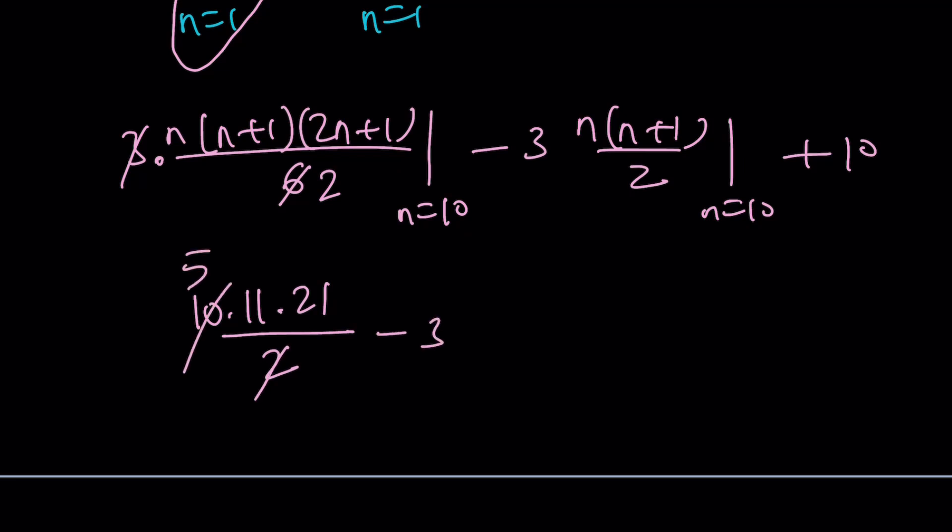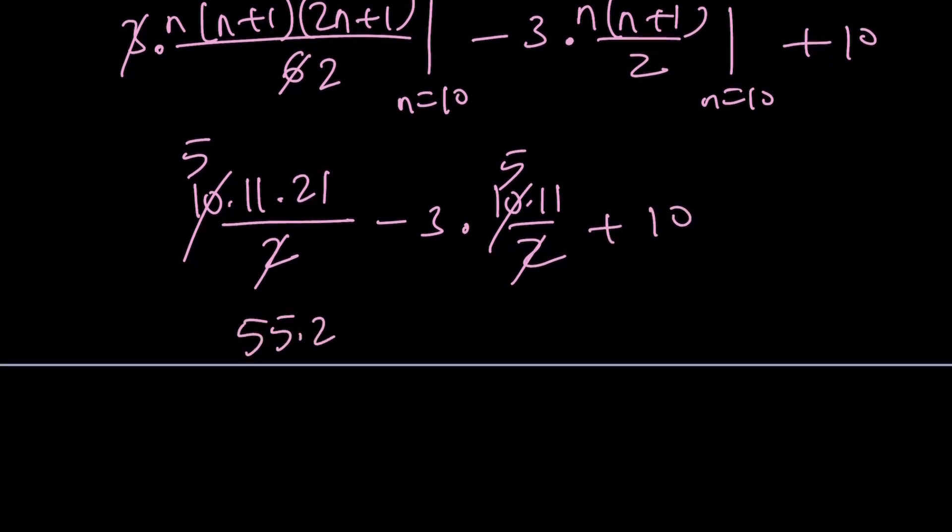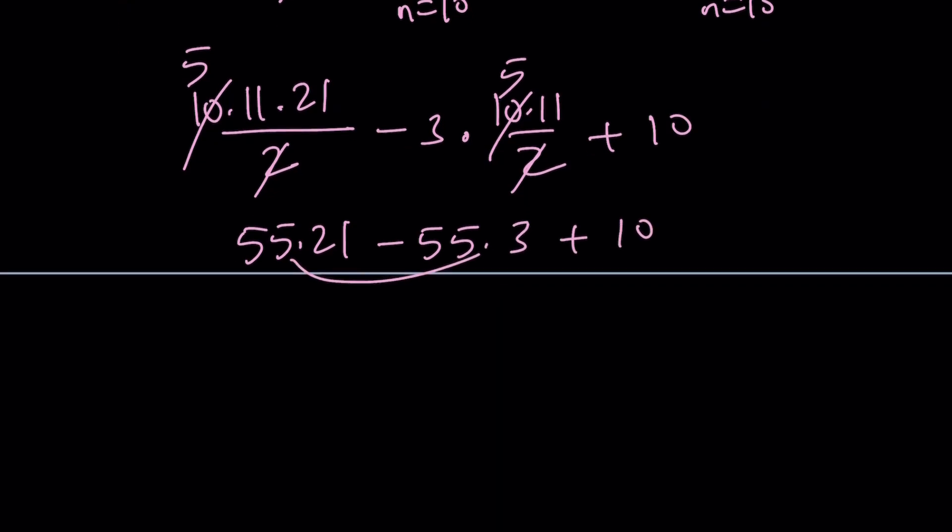Minus 3 times, the 3 cancelled out, remember, we don't have that anymore. 3 times 10 times 11 divided by 2. Again, we can cross-cancel here, plus 10. And now we have 55 times 21 minus 55 times 3, which might help a little bit, plus 10. So I'm going to go ahead and take out a 55 here, which is 55 times 21 minus 3 is equal to 18. And now, to find this, I'm going to do the following.